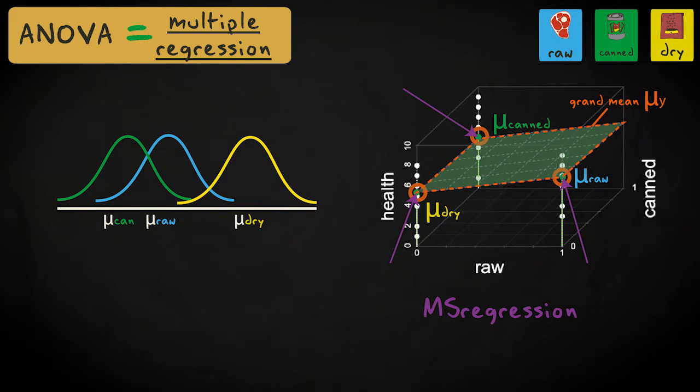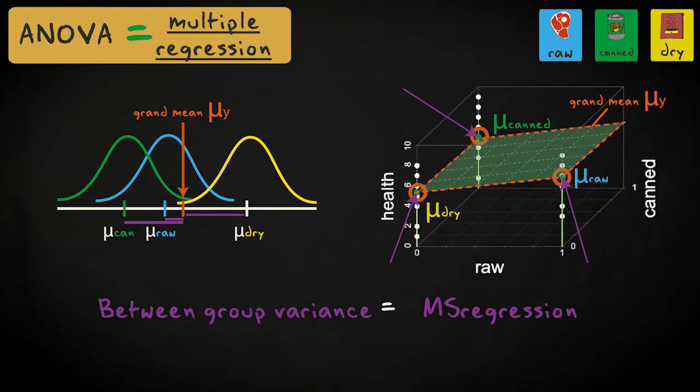The regression mean sum of squares in multiple regression is the variation in the predictions around the mean of the response variable. This corresponds to the variation of the group means around the grand mean in analysis of variance. So the regression mean sum of squares in multiple regression is the between-group variance in analysis of variance.